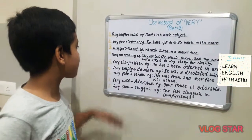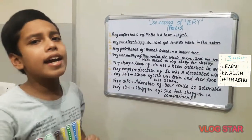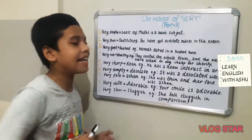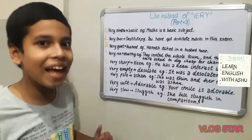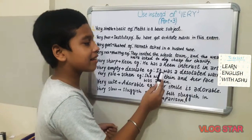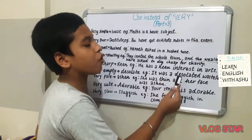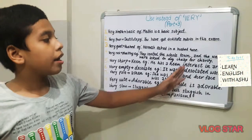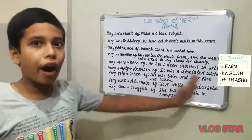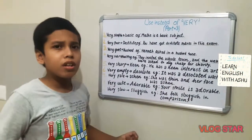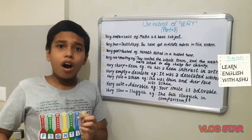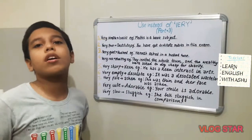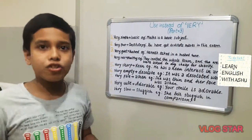Our next word is 'very sharp.' Instead of very sharp, we can say 'keen.' For example, he has a keen interest in arts — it means he wants to do arts very seriously. It is his passion.